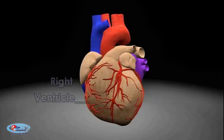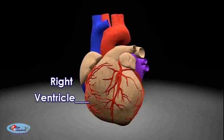The right ventricle is one of four chambers — two atria and two ventricles — in the human heart. It receives deoxygenated blood from the right atrium via the tricuspid valve, and pumps it into the pulmonary artery via the pulmonary valve and pulmonary trunk. It is triangular in form and extends from the right atrium to near the apex of the heart.